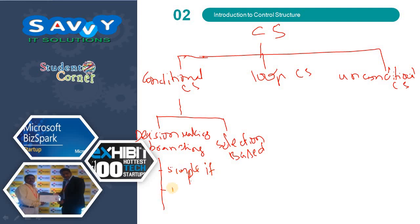One is simple if, second one is if else, third one is nested if else, and last one is else if ladder. Selection based has only one thing: switch case.